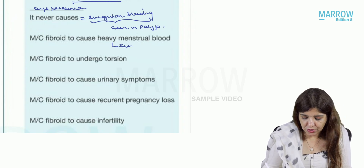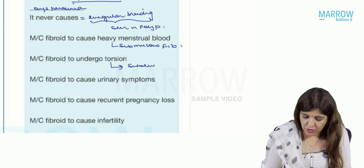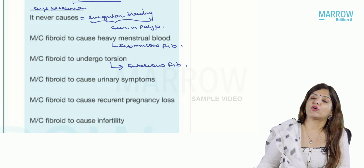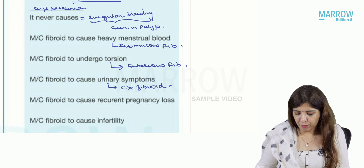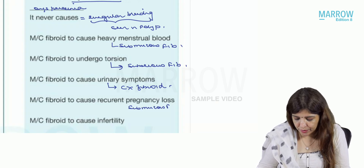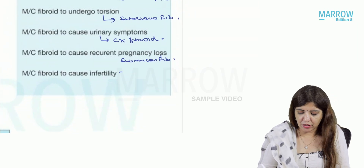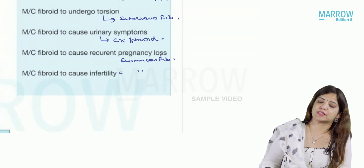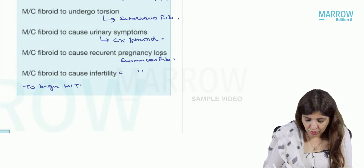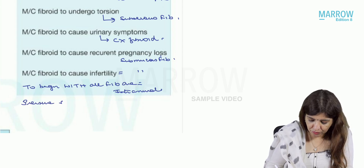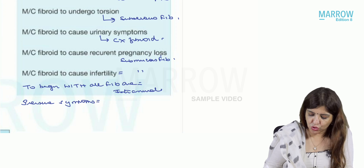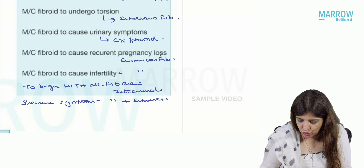The most common fibroid to cause heavy menstrual bleeding is submucous fibroid. The most common fibroid to undergo torsion is subserous fibroid. The most common fibroid to cause urinary symptoms is cervical fibroid. The fibroid that can lead to recurrent pregnancy loss is submucous fibroid. Generally fibroids do not lead to infertility, but the most common one that can is submucous fibroid.